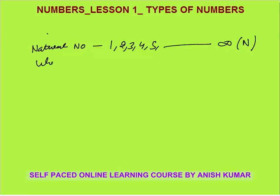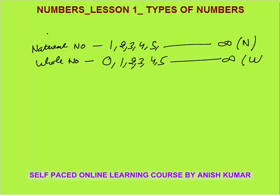Whole numbers. 0 will be added. So 0, 1, 2, 3, 4, 5, up to infinity — they are called whole numbers, and the symbol is W.